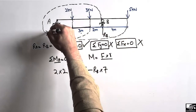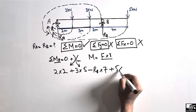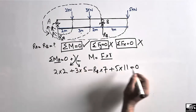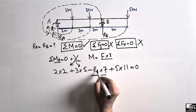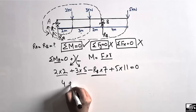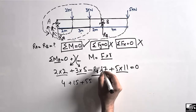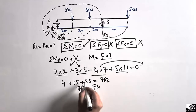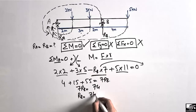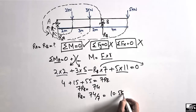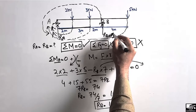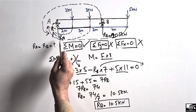The 5 kN load also creates a clockwise moment about point A, so it is positive: 5 multiplied by 11 meters. Setting the summation of all moments about point A equal to zero gives us: (2×2) + (3×5) + (5×11) − 7RB = 0, which simplifies to 4 + 15 + 55 = 7RB, so 7RB = 74. Therefore RB = 74 ÷ 7 = 10.57 kN.